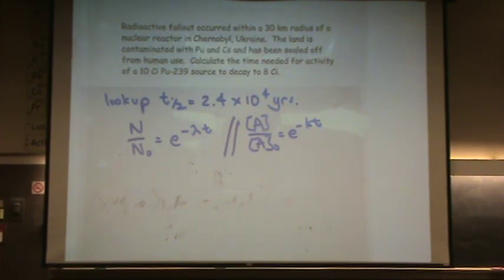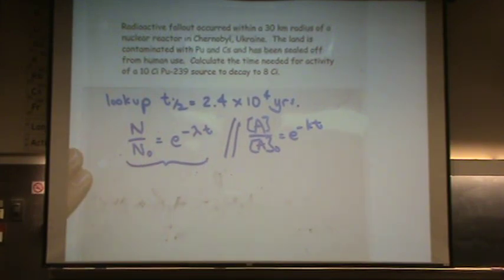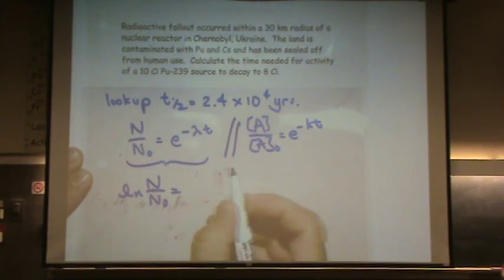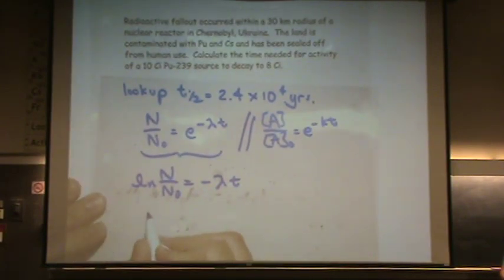We want to solve for time because we want to calculate the time for the source to decay. So I'm going to solve for t. I'll just use this set of variables here. Whichever you prefer is totally fine. You'll need to take the natural log on both sides. And then solve for time. So time, I'll just bring time over here, equals minus 1 over lambda, natural log of N over N naught.